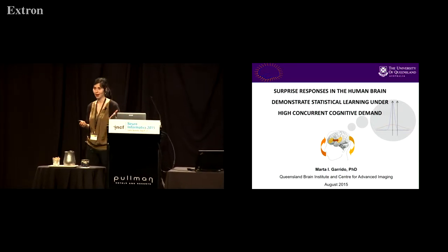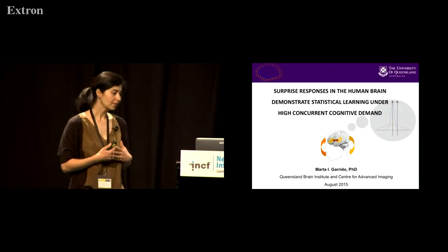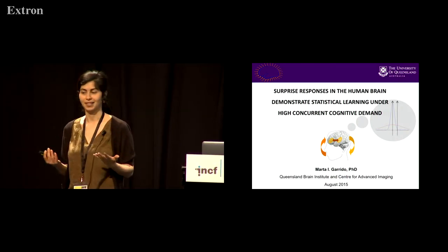I'm going to be talking about how the brain might implement some computational processes and what happens in the brain when it thinks about statistics.